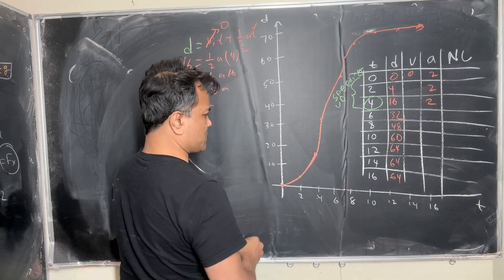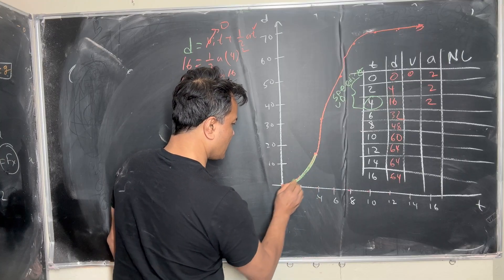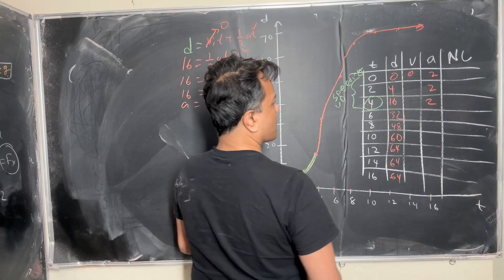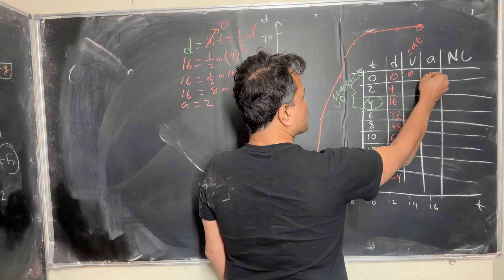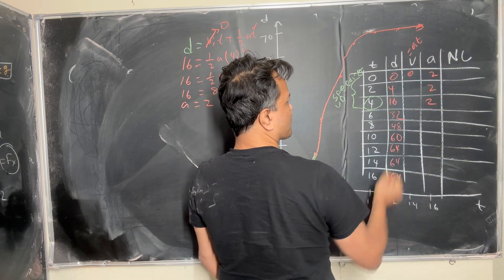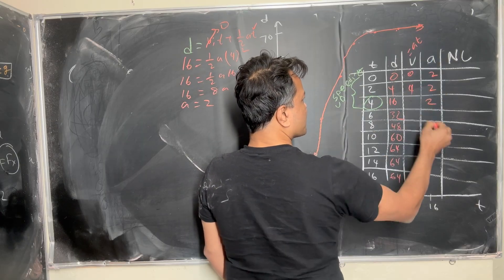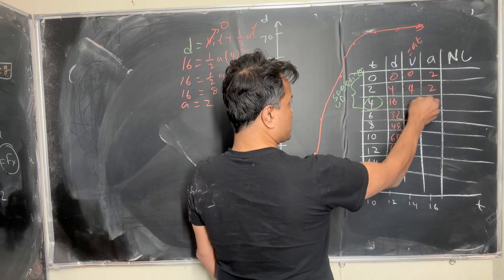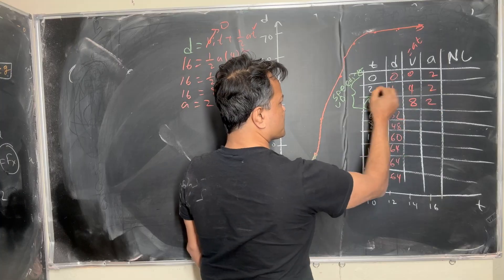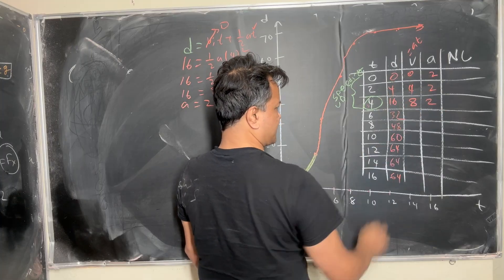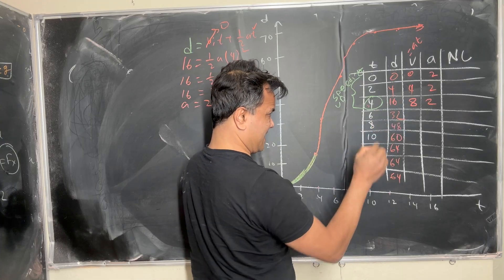So this is speeding up — I'm going to make it green. Using v = a·t: 2×0 = 0, 2×2 = 4, 2×4 = 8. So the velocities for the speeding up phase are 0, 4, and 8.